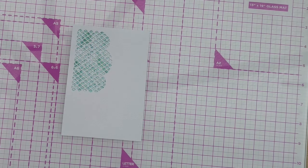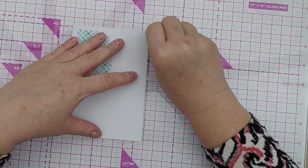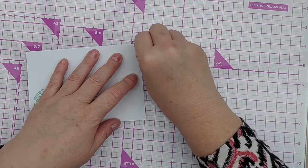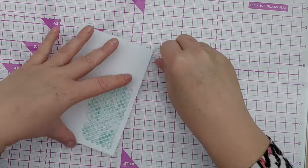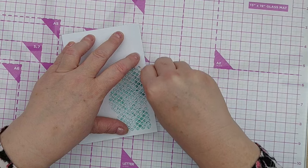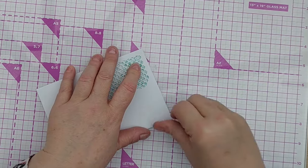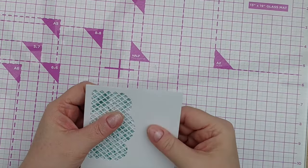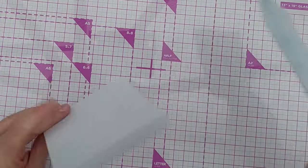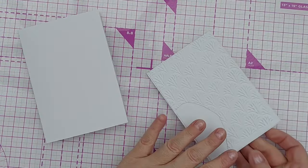So there we have our front panel. I'm just going to run my fingernail down the outside not to distress it but to kind of bevel it a little bit so it looks like it's been die cut. I think it just looks a little bit neater sometimes, a bit more finished. So that can actually go on to my card blank now.